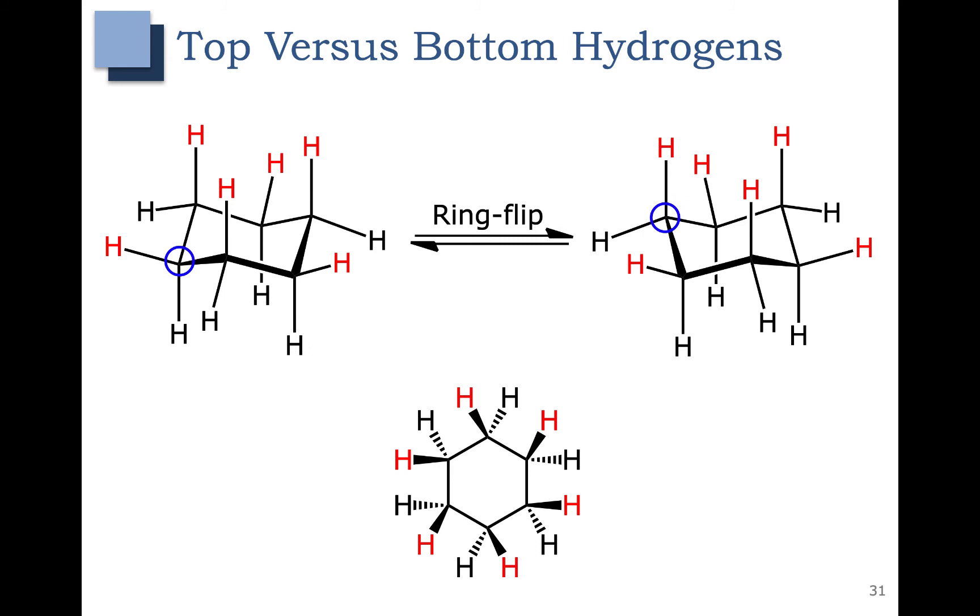And you can also see that all of our hydrogens in red are still pointed up. So this hydrogen here was up, and it's still up. The difference is that it went from up in equatorial to up in axial.